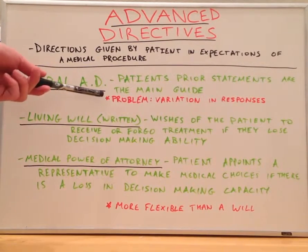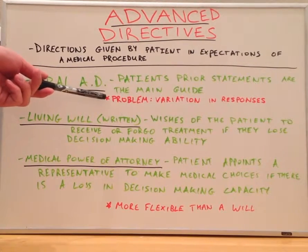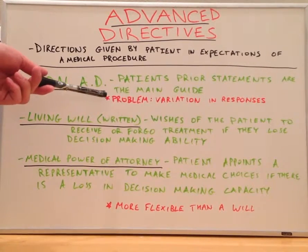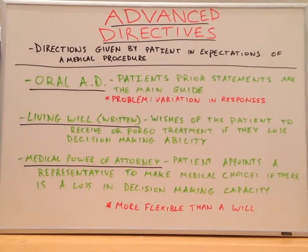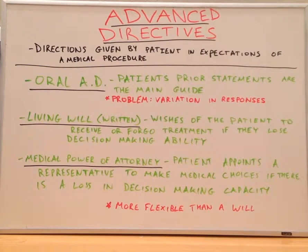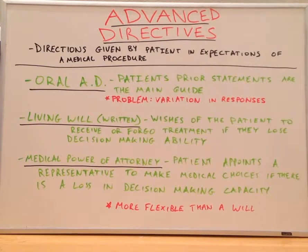The problem that can arise from an oral advanced directive is there can be a variation in responses from the family members and friends. Normally, a group of composite responses are given and the most common answer is the route which is taken.